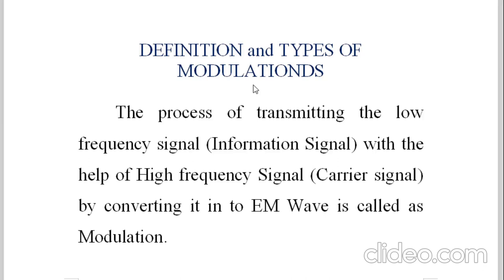The second advantage of modulation: not only is lambda reduced, but the size of antenna required is lambda by 4 due to modulation. And as we are using a high frequency signal as a carrier signal, lambda is very less or low, and in that again only 1/4 is required. So in short, that was the conclusion about why modulation is required. Now in short, the process of transmitting the low frequency signal — called information signal — with the help of a high frequency signal which we call the carrier signal, by converting it into electromagnetic waves, is called modulation. This is a general definition of modulation, and today we are going to study the precise definition according to the type of modulation.